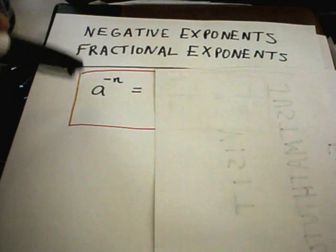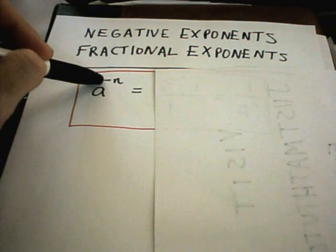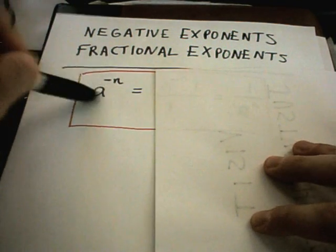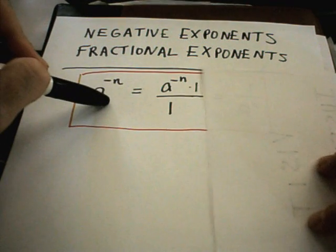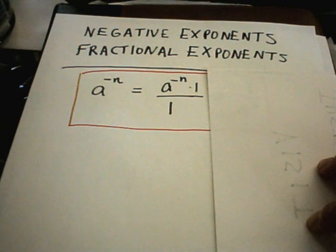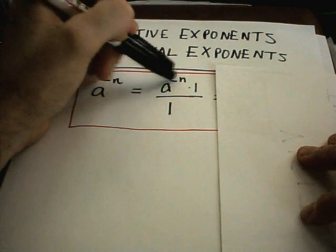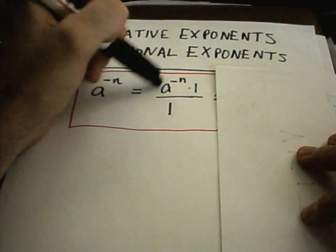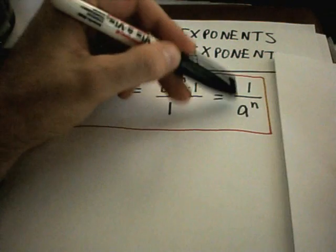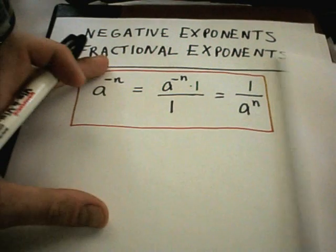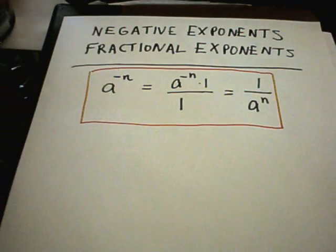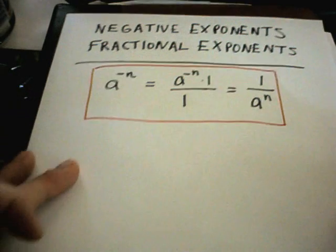If you have a number raised to a negative power, you can rewrite that. You can rewrite anything as itself by just dividing over 1. The idea is, if you have a negative exponent, you can basically take that term, that factor, and put it in the denominator of your fraction and make it a positive exponent. And that's the rule.